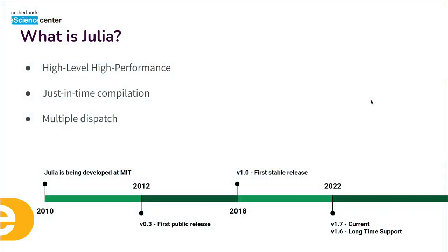So what is Julia? Julia is a high-level and high-performance language. It's very easy to understand and write Julia code — that's the high-level aspect. You don't have to declare variables before using them, you don't have to declare types. It's also high-performance in the sense that it's fast, and the way Julia achieves both is by using just-in-time (JIT) compilation. When you execute your code, it's actually being compiled behind the scenes, so the first time you run it you have a pre-compilation time, but the second time it's much faster.